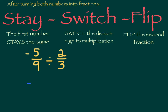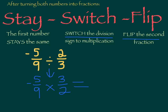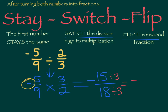Let's see what that looks like with this example. My first number, negative five-ninths, stays the same. I switch the division sign to multiplication, and I flip my second fraction: two-thirds becomes three-halves. Now multiply across: five times three is fifteen, nine times two is eighteen. I have a negative times a positive, so my answer is negative fifteen-eighteenths. I can simplify this — both are divisible by three. Negative fifteen divided by three is negative five, eighteen divided by three is six. So my simplified quotient is negative five-sixths.